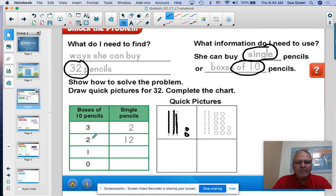A second way you could do this is two 10s and 12 ones. She could get two boxes of pencils and 12 singles, and she would still have 32.